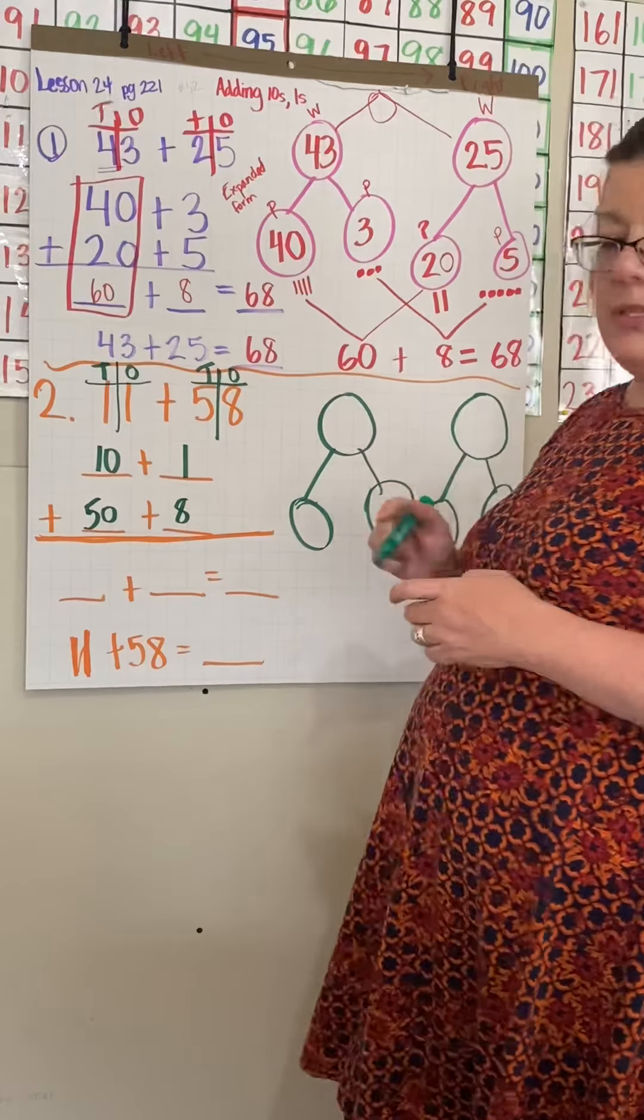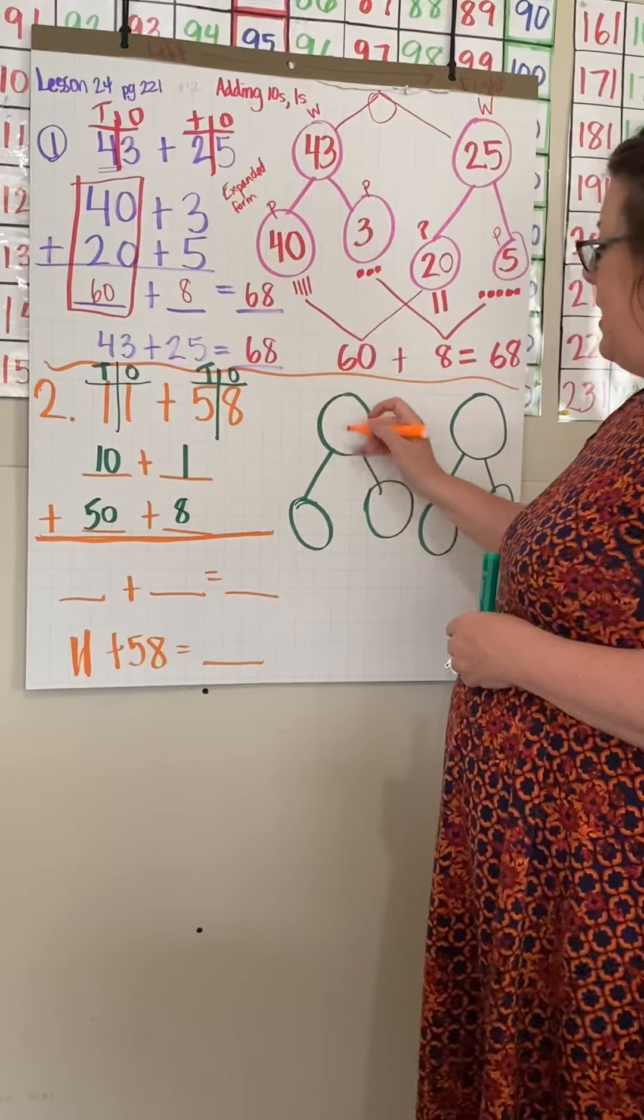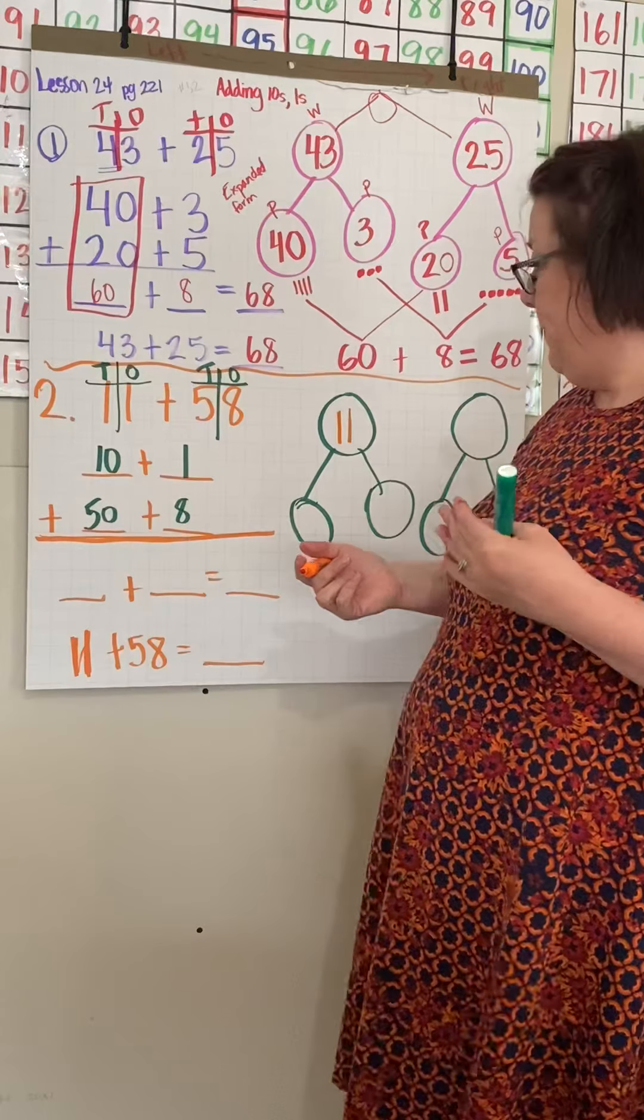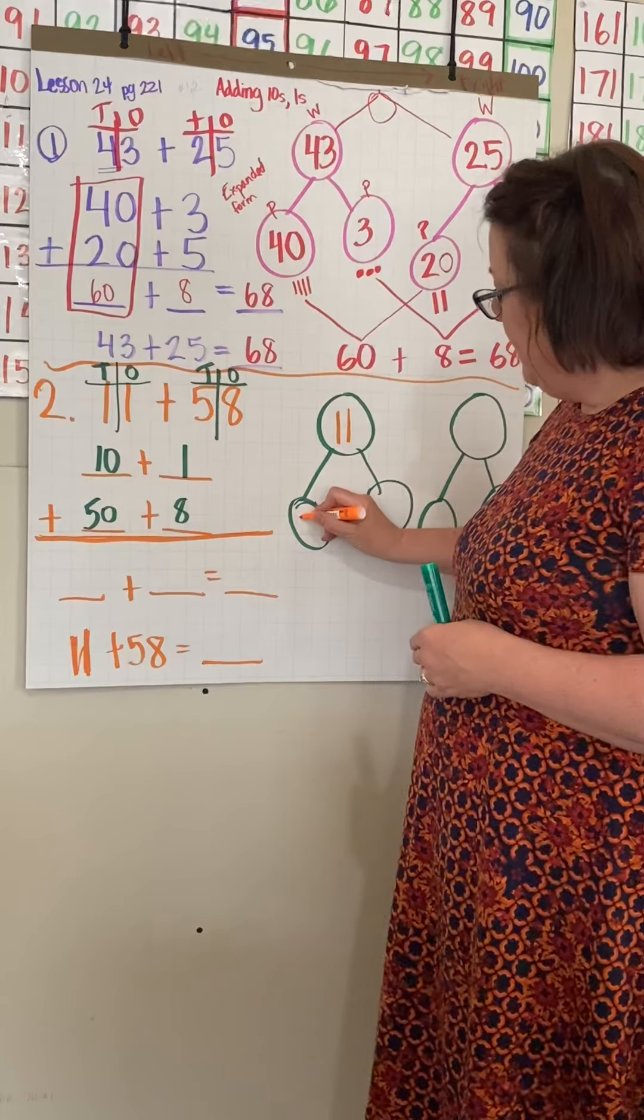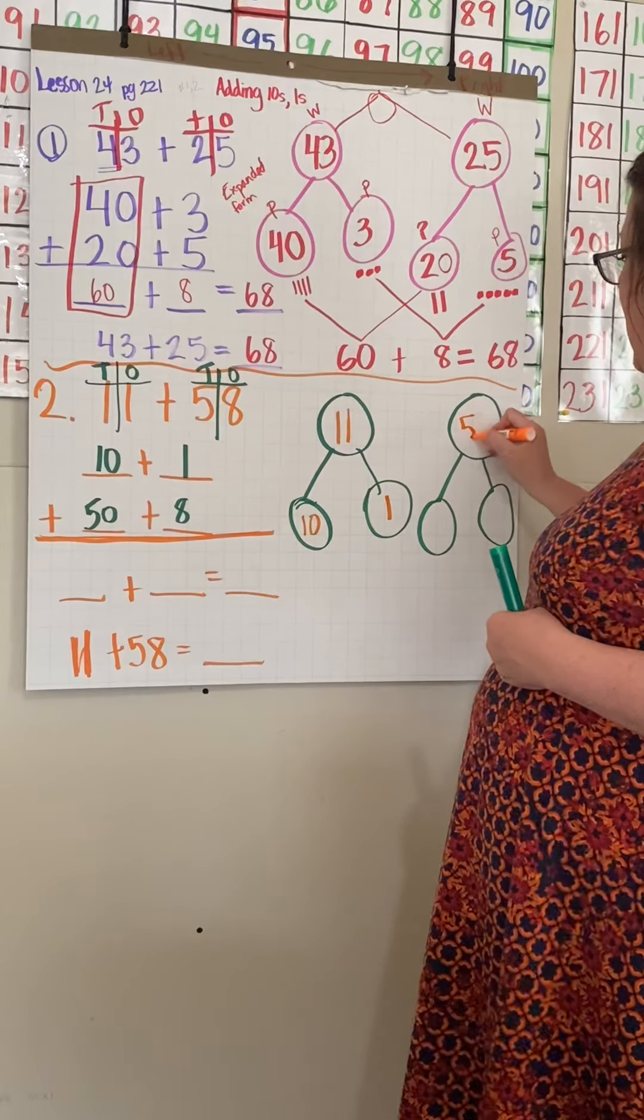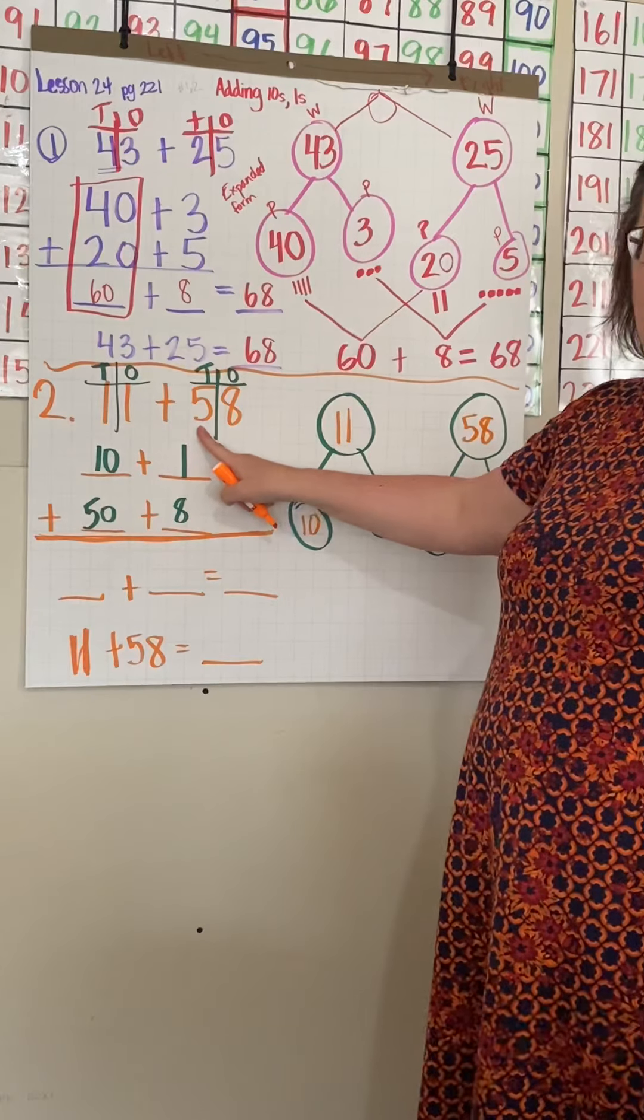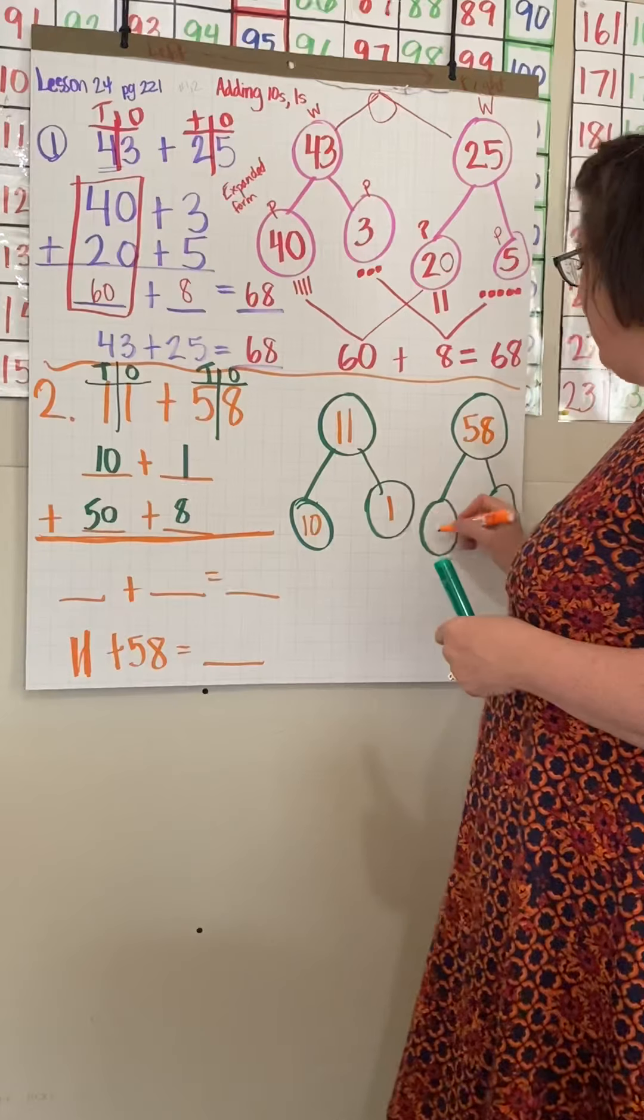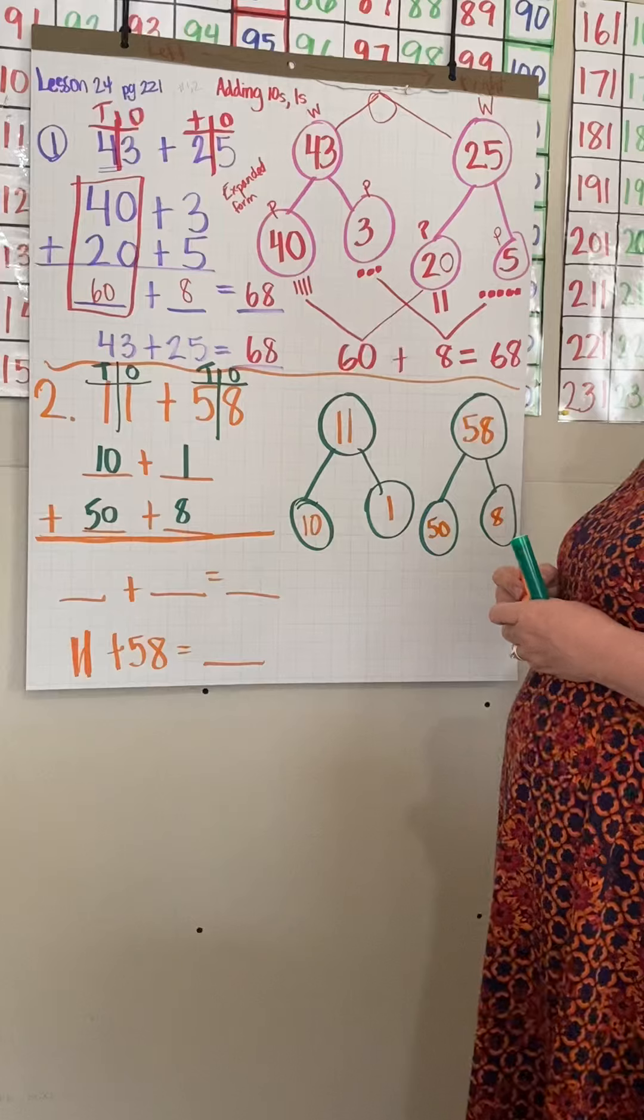Now I have 58. What's 58 in expanded form? 50 plus 8, right? 50 plus 8. Let's put those same numbers on this side. If I have 11, what did we say 11 is in expanded form? 10 plus 1, right? So we have 10 plus 1.